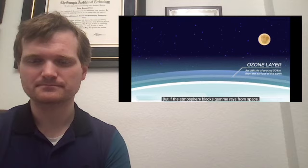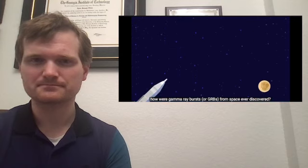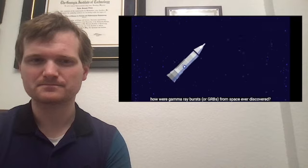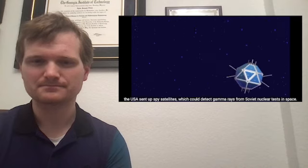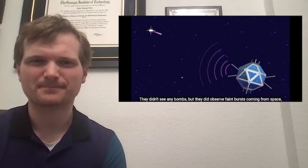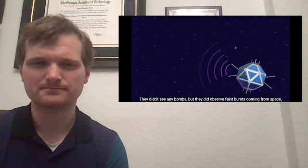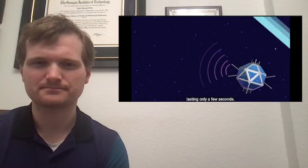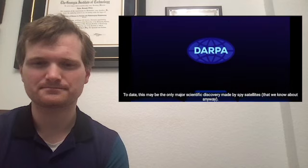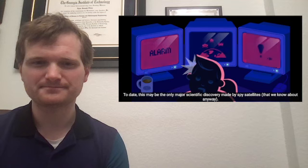But if the atmosphere blocks gamma rays from space, how were gamma ray bursts or GRBs from space ever discovered? During the Cold War, the USA sent up spy satellites which could detect gamma rays from Soviet nuclear tests in space. They didn't see any bombs, but they did observe faint bursts coming from space, lasting only a few seconds. To date, this may be the only major scientific discovery made by spy satellites that we know about anyway.